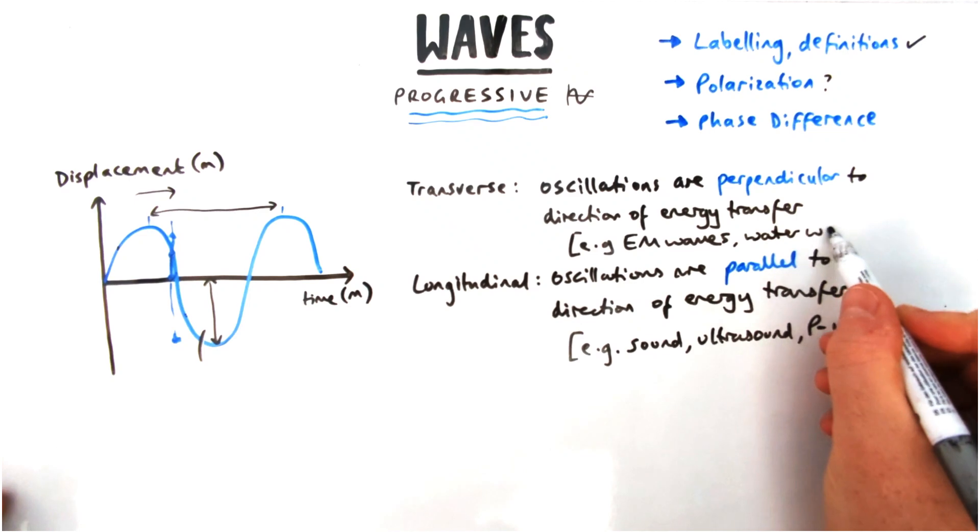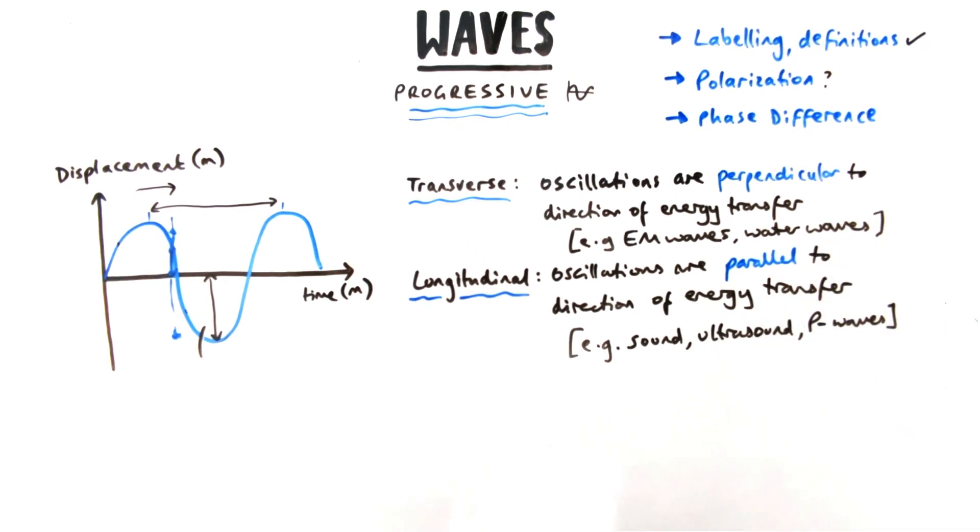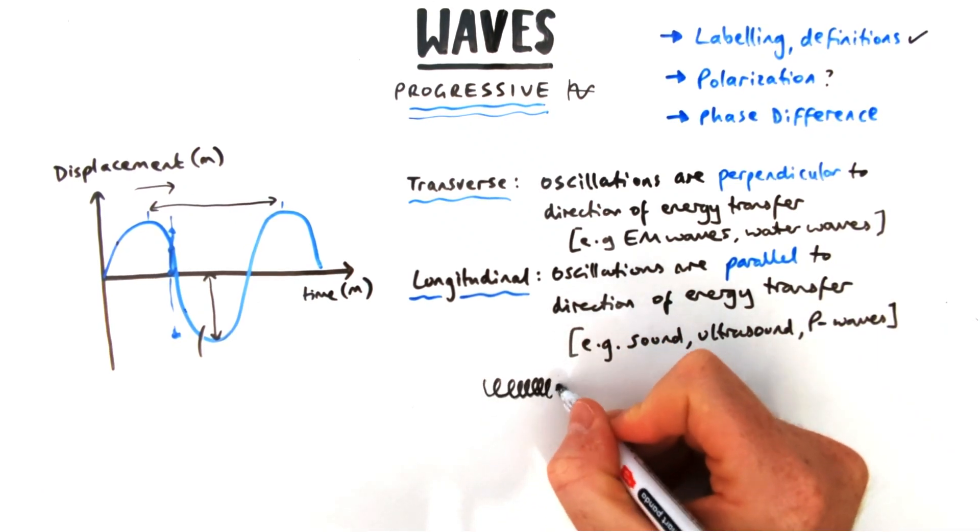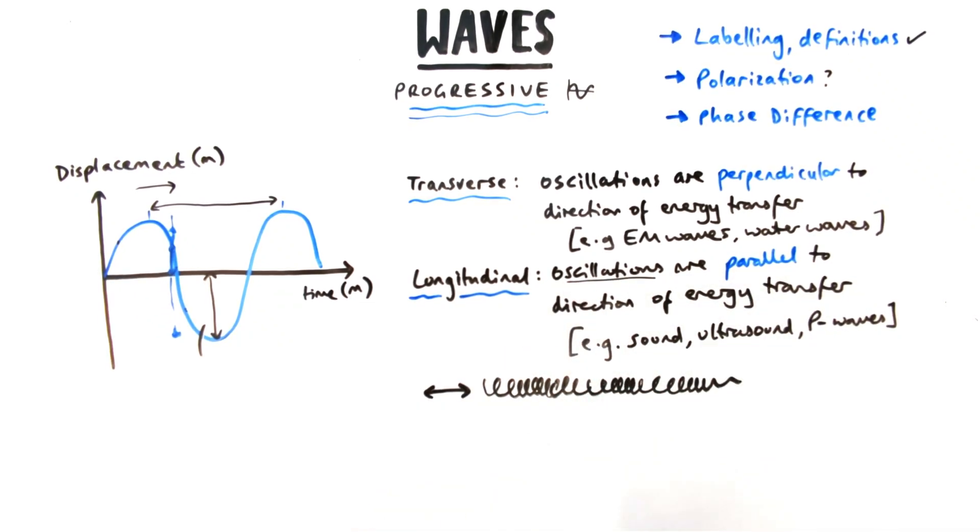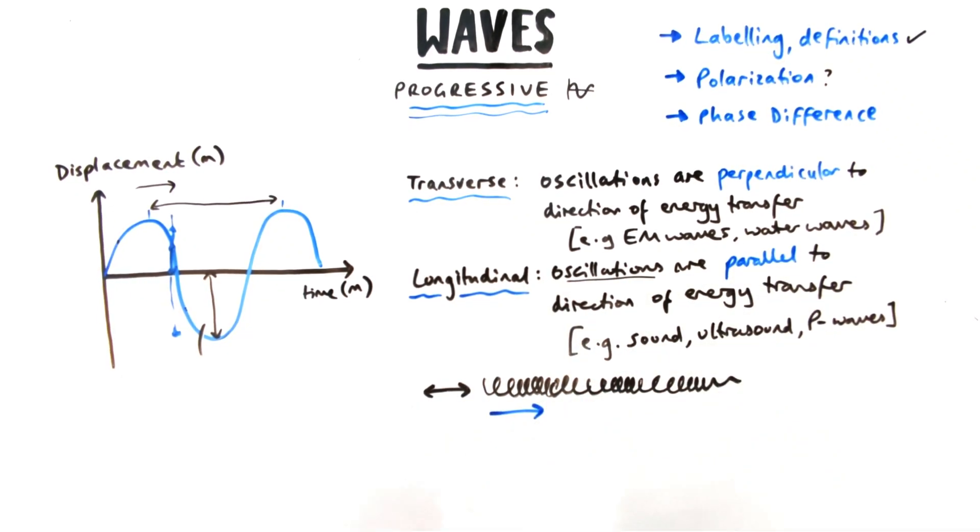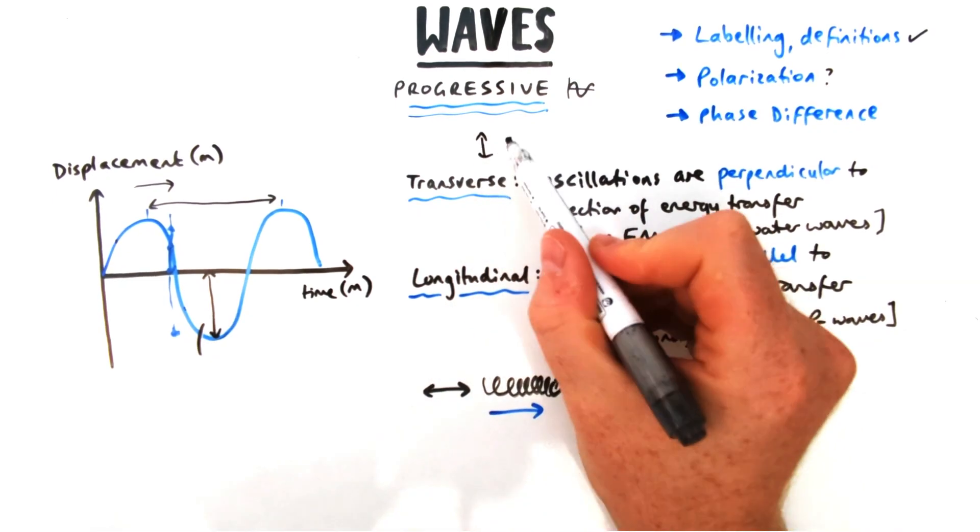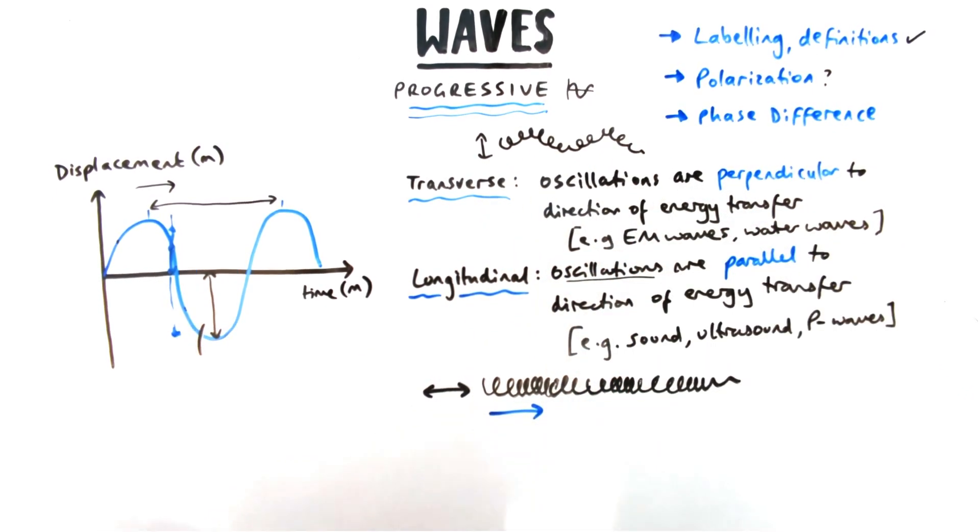The easiest demonstration of this you might have seen is on a slinky or something similar. If you push it from left to right, the wave moves left to right. You have these compressions traveling down the wave. Whereas if you're trying to demonstrate a transverse wave, if you move it up and down, the wave will still go left to right. This time it's at a right angle to the oscillations that caused it.